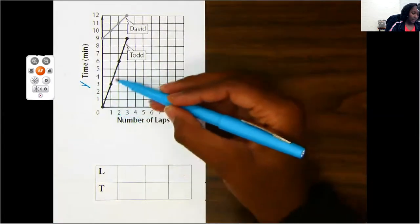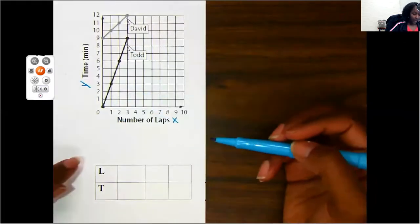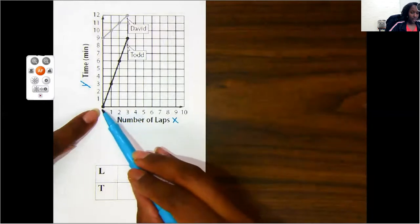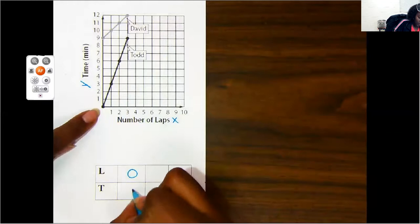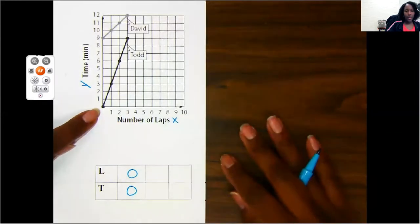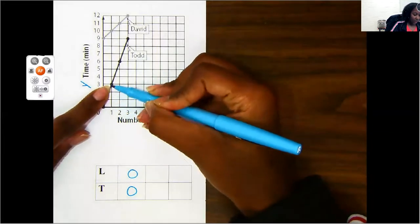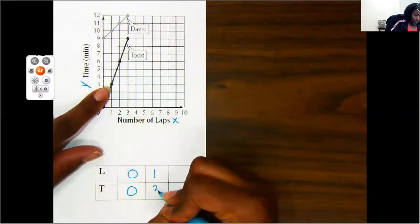Okay, we're only going to look at Todd, because I like his numbers. So if I look at Todd's first dot, the x is on zero, and the y is also on zero. So I'm going to put zero, zero for my first ordered pair. If I travel to his next dot, I see that my x is on one, and my y is three. So I'm going to put one and three.